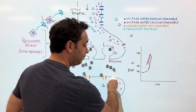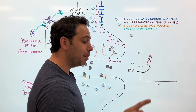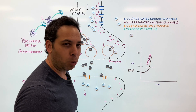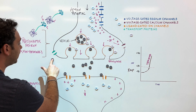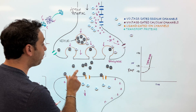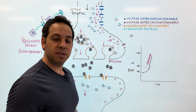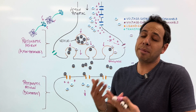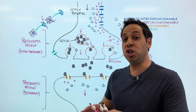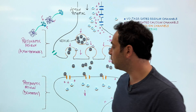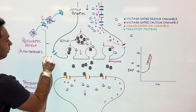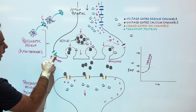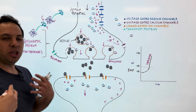Some neurotransmitters are going to break apart or go away, but some of them — which is kind of cool — are going to recycle themselves through these transporter proteins. What I mean by that is some of them are going to get reabsorbed by the original neuron and get repackaged into a vesicle. It's like we have such efficient cells — it's recycling. This process is called reuptake.